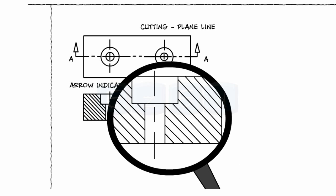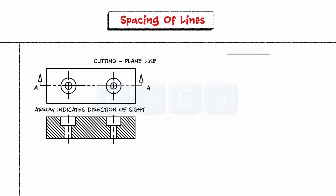Section lines usually consist of thin parallel lines drawn at an angle of 45 degrees to the principal edges or axis of the part. Hatching is the process of drawing section lines.